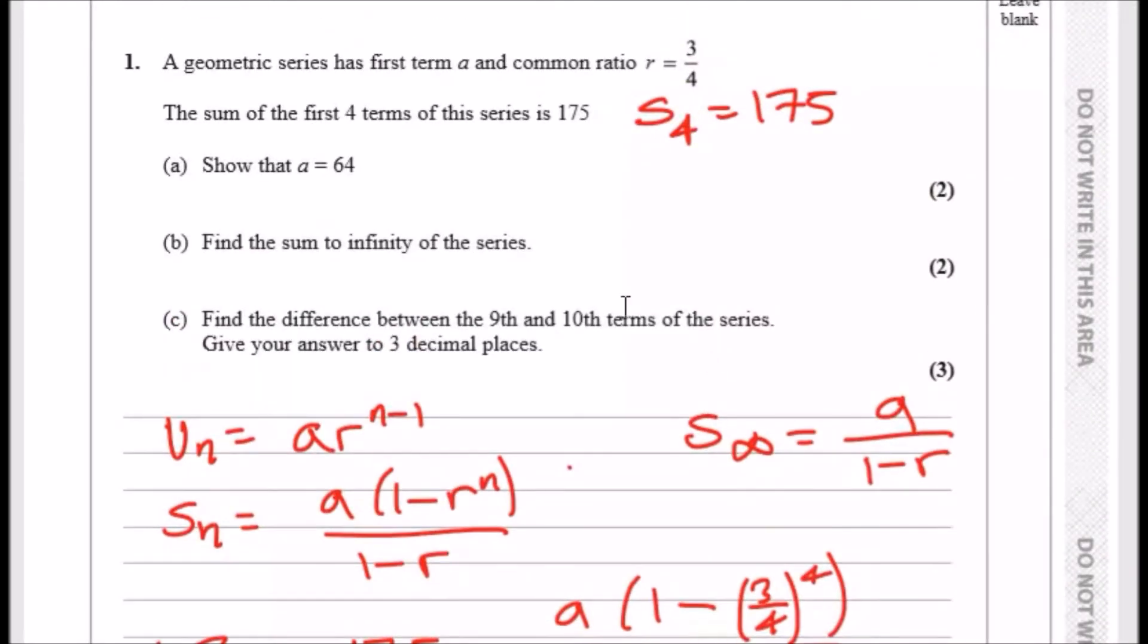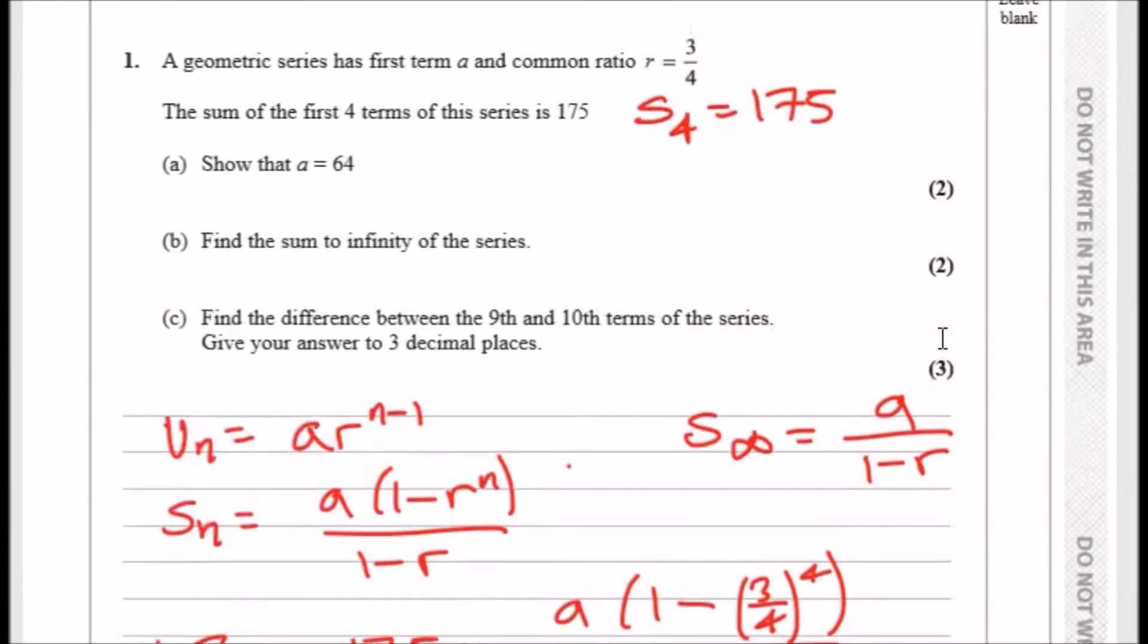Now, part B. Find the sum to infinity of the series. Well, the sum to infinity is just a over one minus r. So plug in the value a, which is 64. Plug in the value of r, which is three quarters. Smash the calculator. And you should get an exact answer of 256.